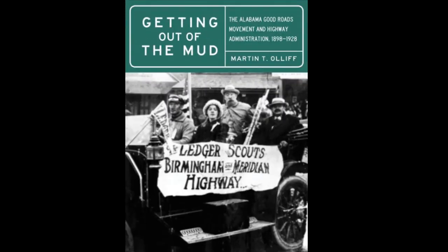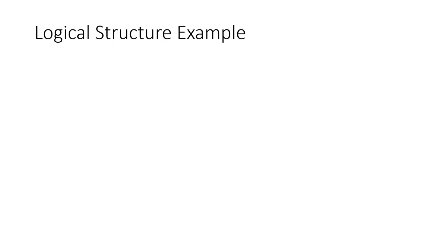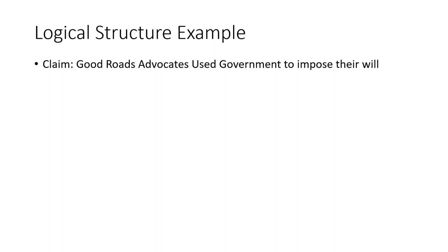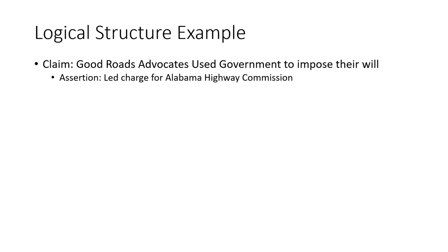Let me give you an example of this logical structure as I employed it in my book, Getting Out of the Mud: Alabama's Good Roads Movement and Highway Administration, 1898–1928. One of the claims I made was that people who advocated for roads at the beginning of the 20th century in the US harnessed the power of government at the county, state, and federal level to route roads and to improve road surfaces as they, the advocates, saw fit.